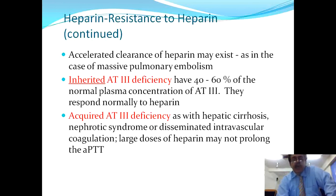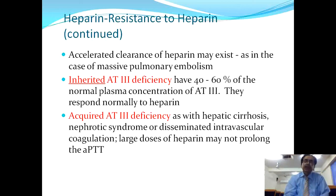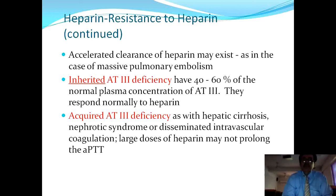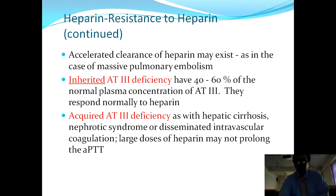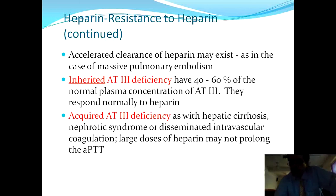If antithrombin 3 is deficient, there may be resistance to heparin. Acquired antithrombin 3 deficiency can occur in hepatic cirrhosis, nephrotic syndrome, and disseminated intravascular coagulation, in which large doses of heparin may not prolong the APTT.